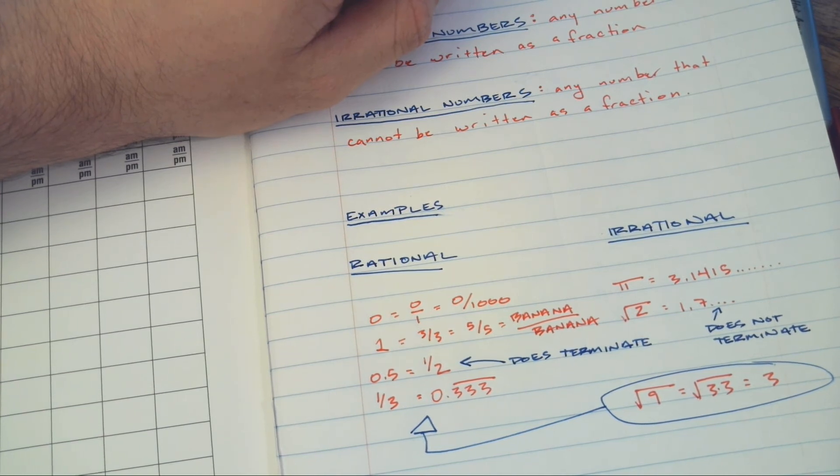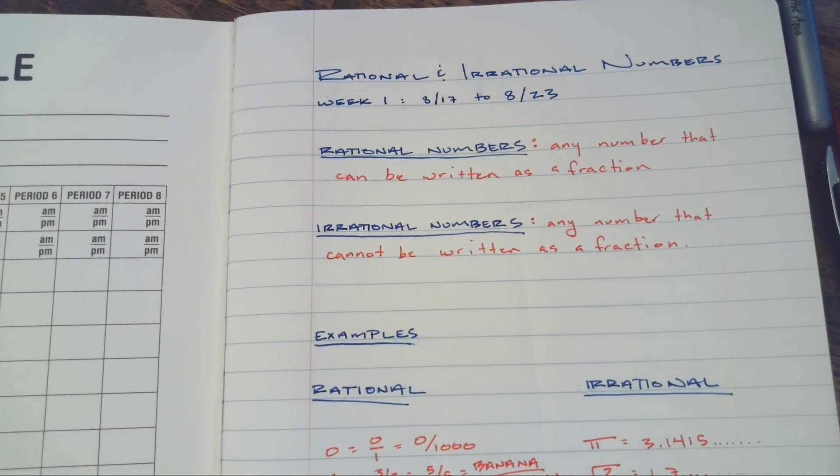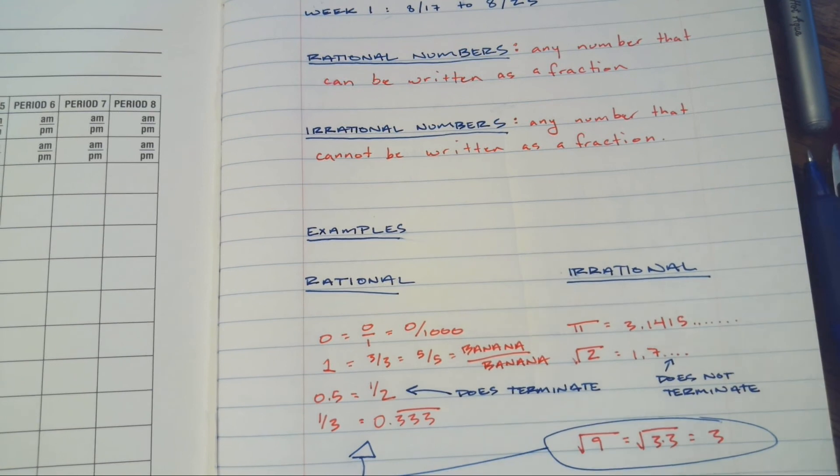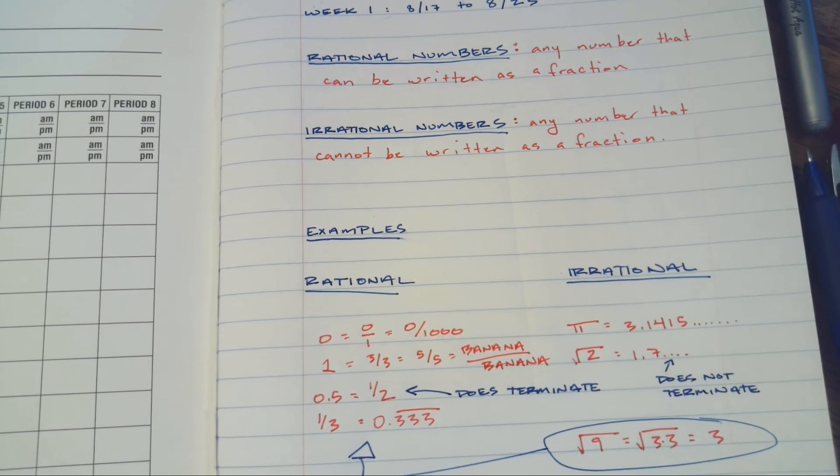All right, so I think that pretty much sums up what are rational and irrational numbers. Any questions, please hit me up.